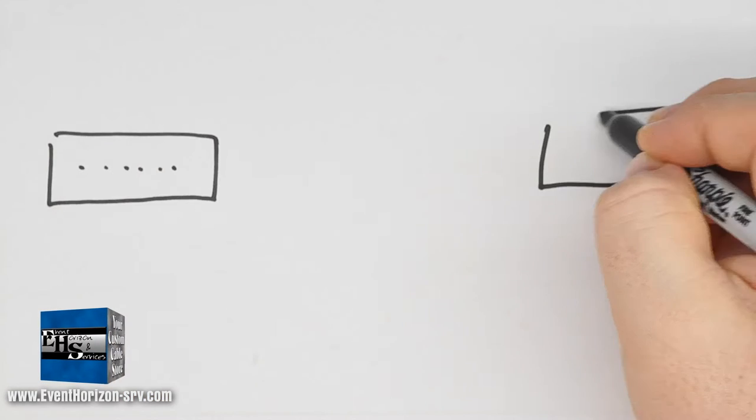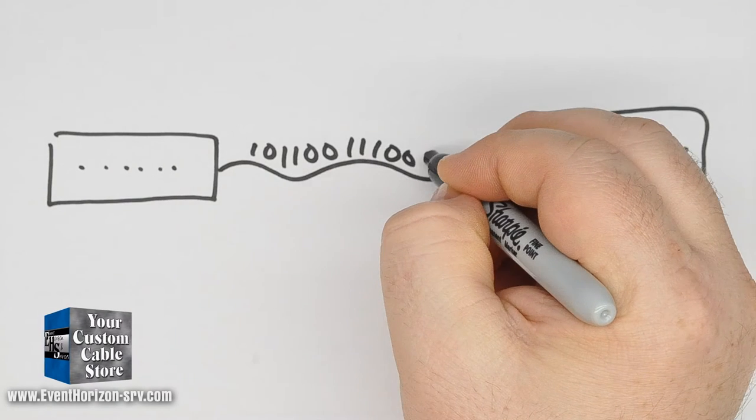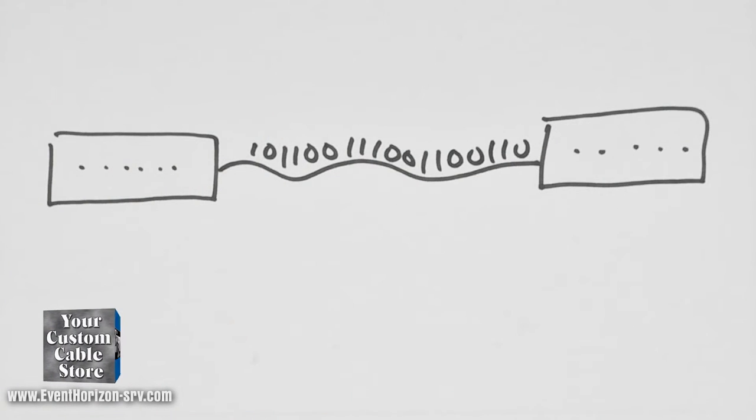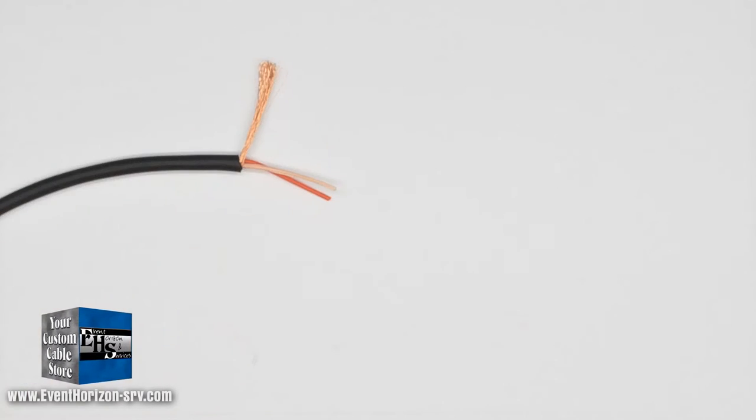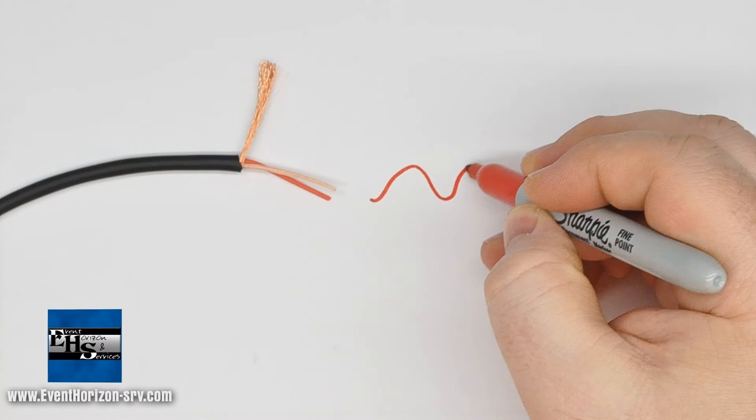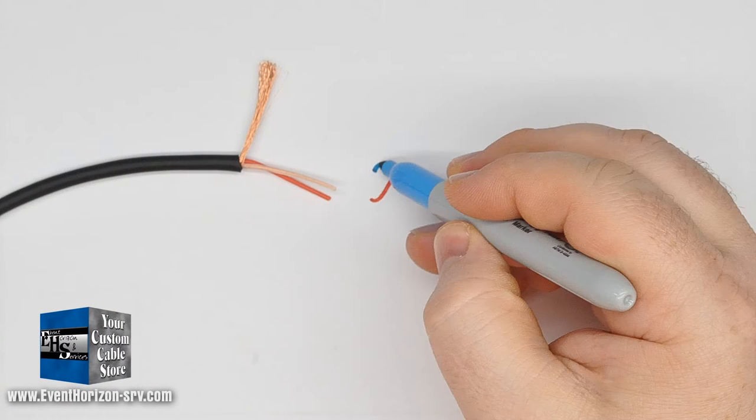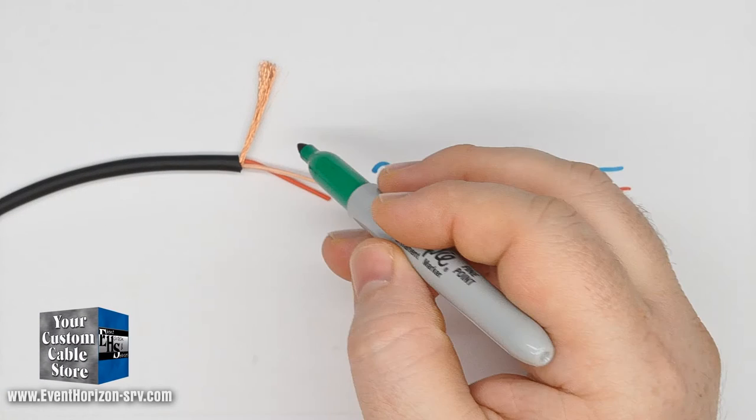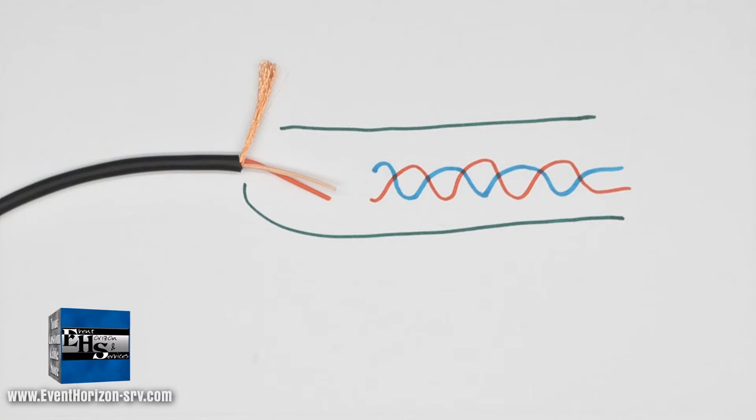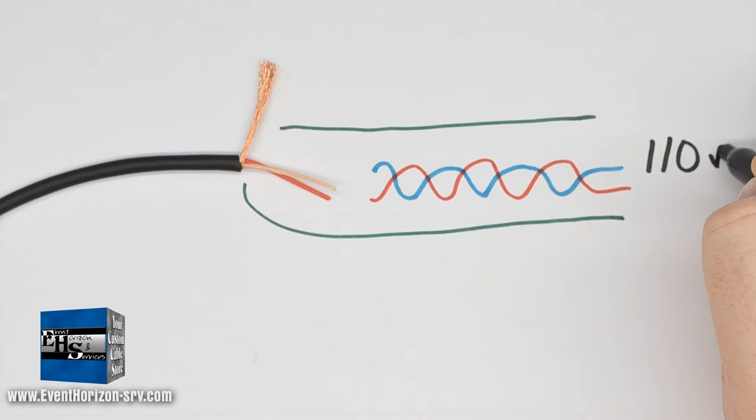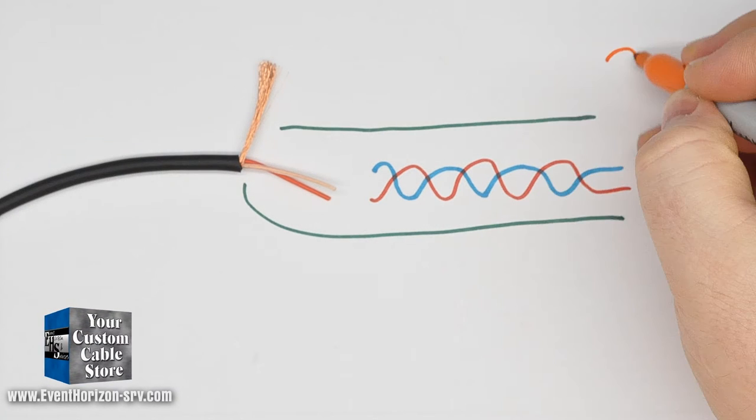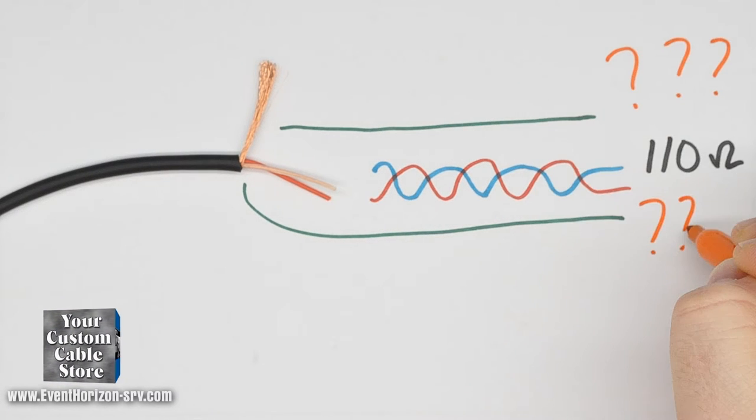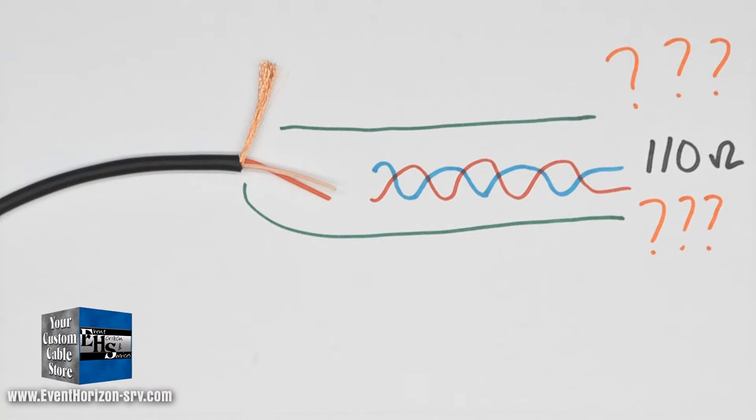Let's first look at digital AES-EBU and DMX wire. Digital audio cable for AES-3 or AES-EBU, commonly called AES, is very similar to mic cable. It is a twisted pair shielded cable and has a characteristic impedance of 110 ohms. Characteristic impedance is beyond the scope of this video, so look for future videos on that.